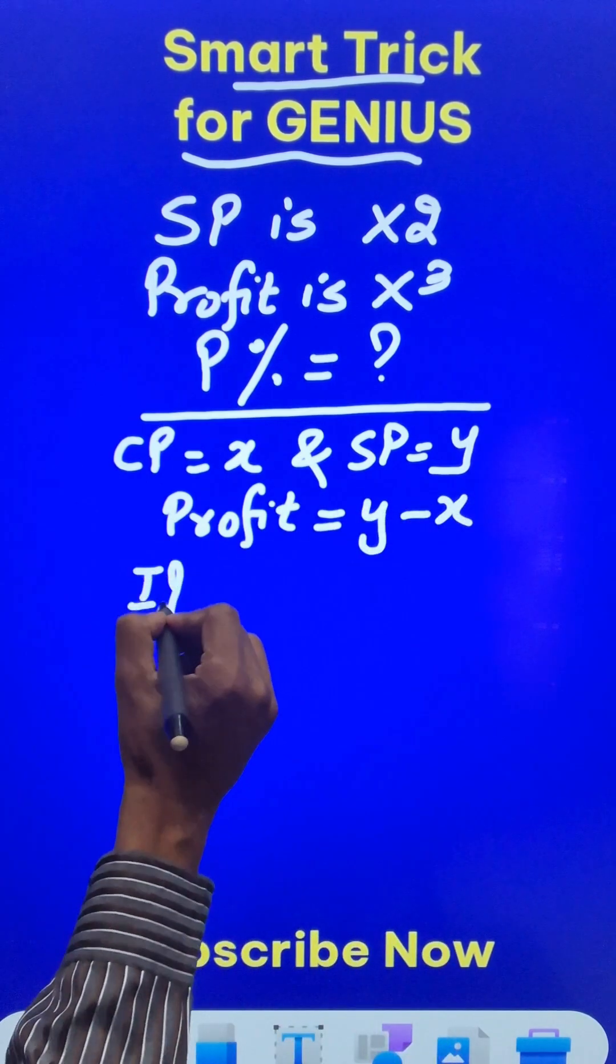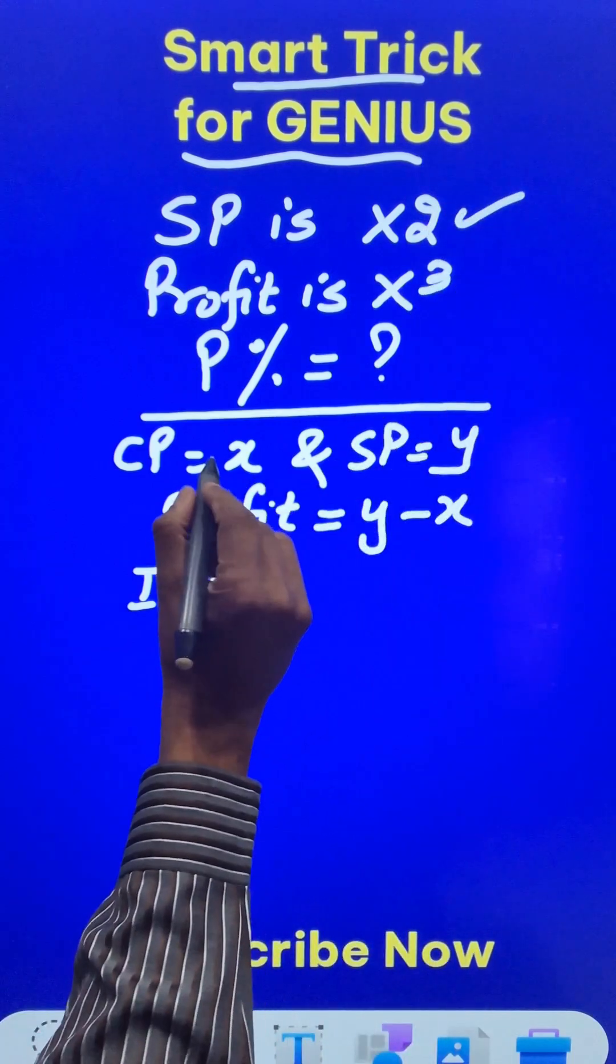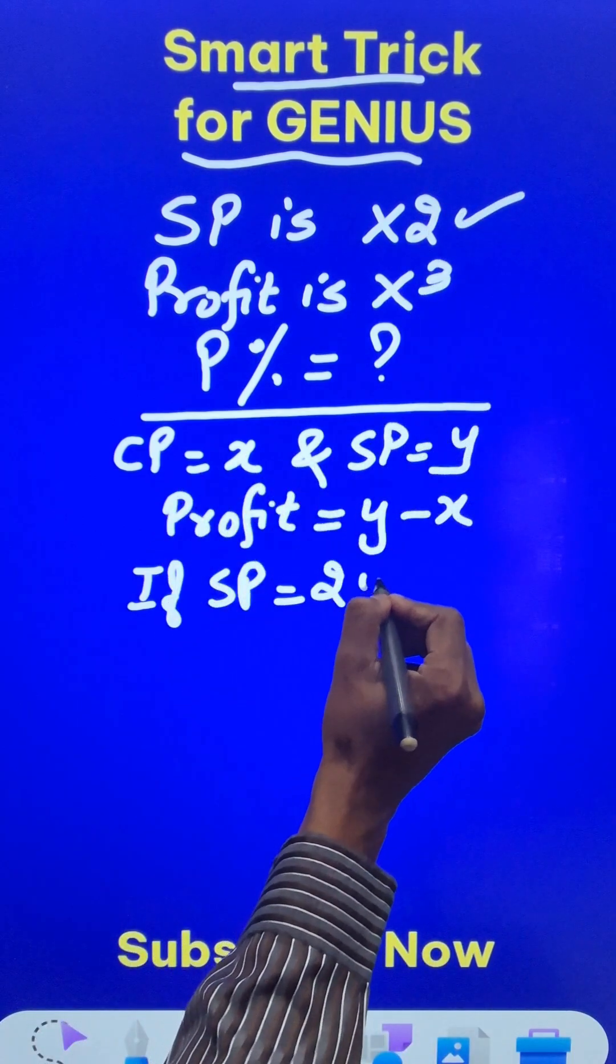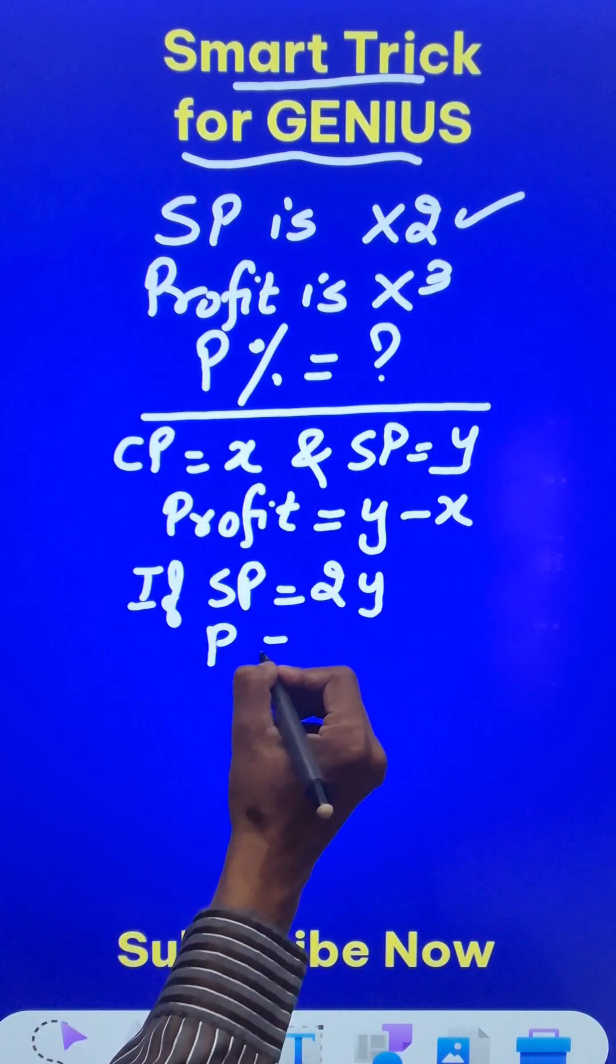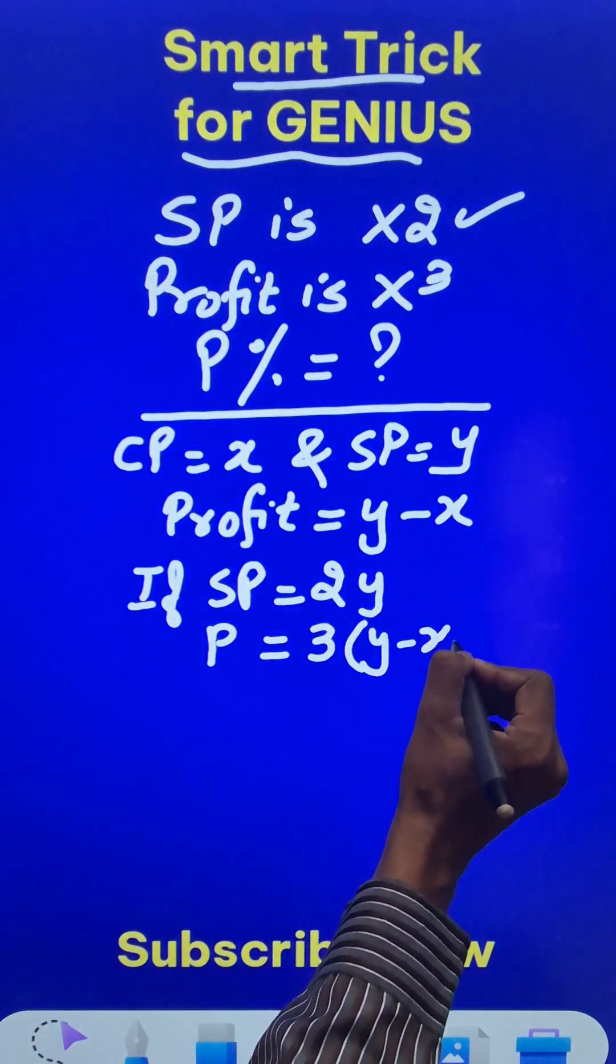Now if the selling price is multiplied by 2, it was Y, now it becomes 2Y. And the profit is multiplied by 3, which is 3 times (Y minus X).